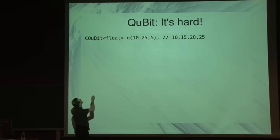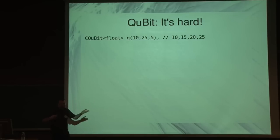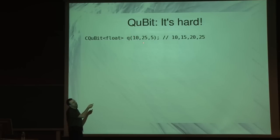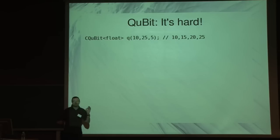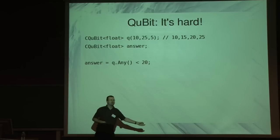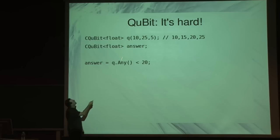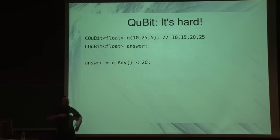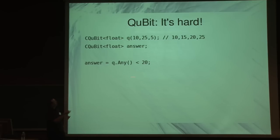So, practical example and some code — this makes things much more real. We'll create a qubit. You'll see it's a C++ thing, but don't let that scare you. We'll create a qubit with all the values between 10 and 25 in five increments — those values there. Q now contains all of these values at the same time. So if I take this variable with all the values at the same time and say, is it less than 20? What it's actually saying is: look at any of those values, and if they're less than 20, we'll have a result. And just like the Schrödinger's cat experiment, you don't actually get an answer when you perform the operation — you only get an answer when you look at it.